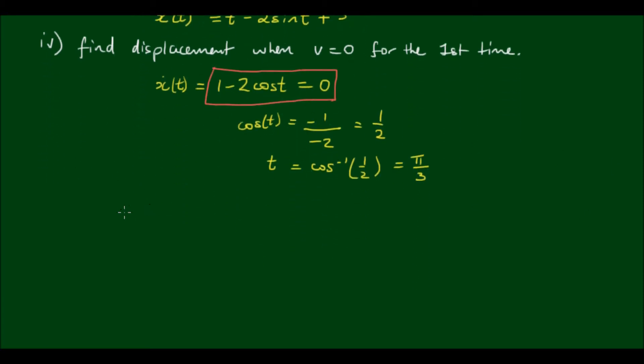To find the displacement we substitute this value of time into our displacement equation. x(π/3) equals π/3 minus 2 times sin(π/3) plus 3. This evaluates to π/3 minus 2 times √3/2 plus 3. The twos cancel, and we finally end up with π/3 minus √3 plus 3 meters. When the particle is at rest for the first time it will have this value of displacement.